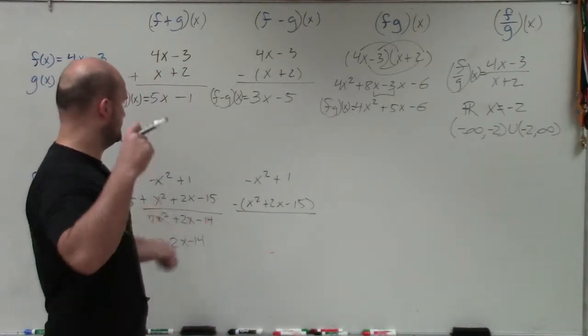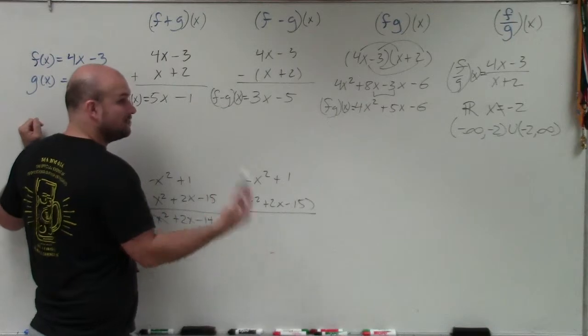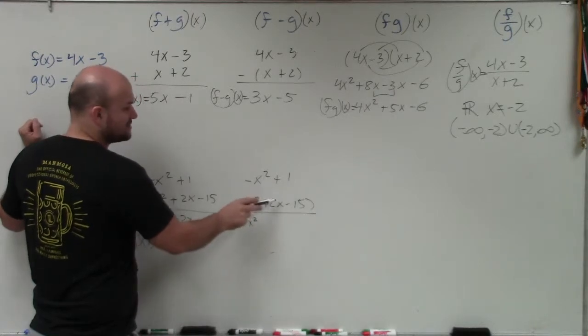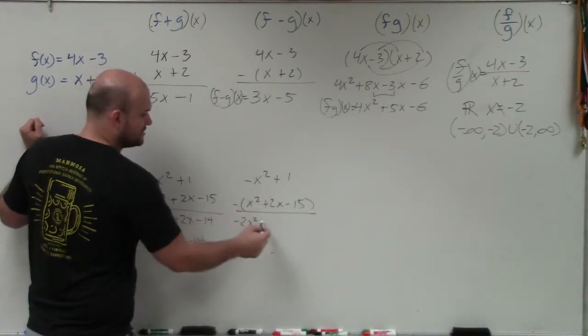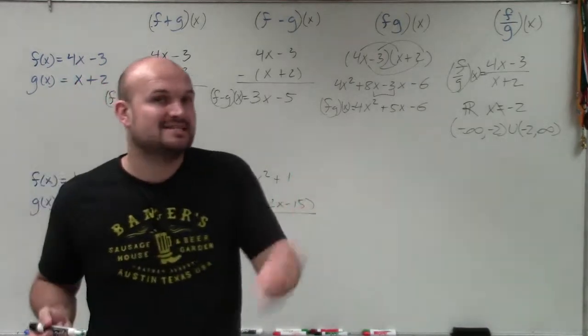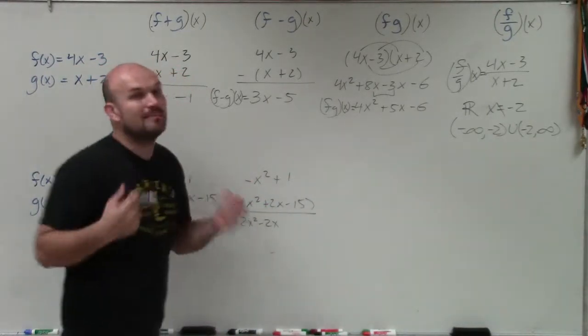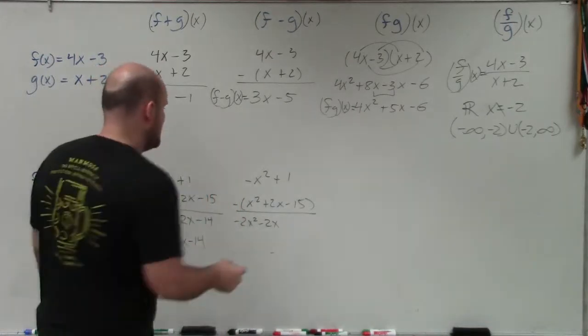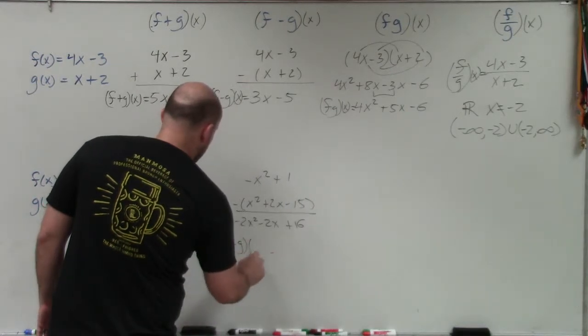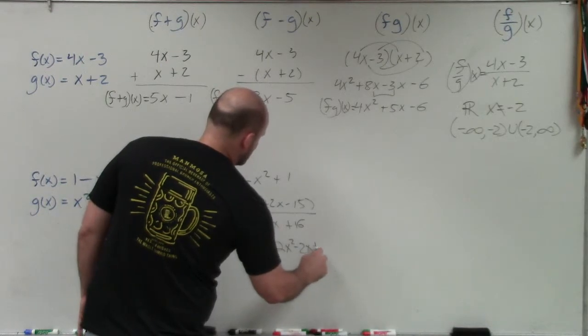All right, so add vertically. So negative x squared minus x squared. So if you owe me $1 and you borrow another dollar, then you now owe me negative 2x squared. Again, there's no 2x, but now I'm subtracting. So therefore, that's a negative 2x. Or there's no x up here to subtract from. So it's basically like 0 minus 2x, which would be a negative 2x. And then 1 minus negative 15. Remember, minus and negative 15 will be a double negative. So that'd be positive. So that's going to be a positive 16. So f minus g of x would be negative 2x squared minus 2x plus 16.